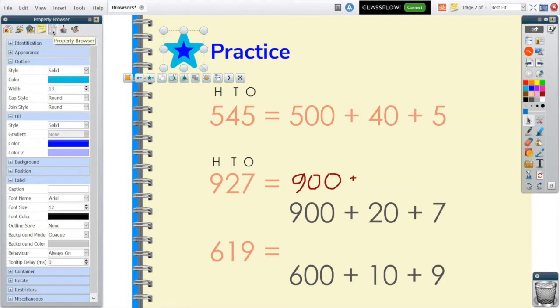Property Browser helps you to see all of the properties of the flipchart page itself, as well as properties of each object, for instance, this selected star shape.